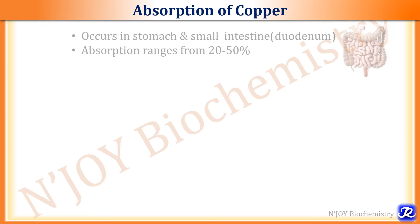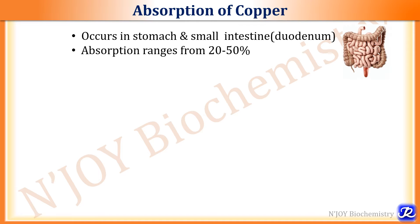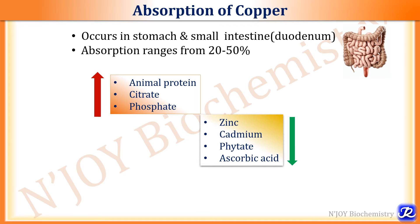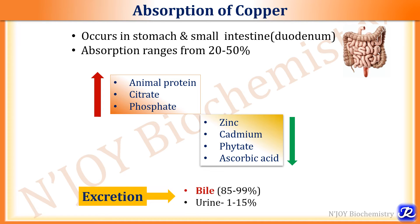Absorption of copper occurs in the stomach and small intestine, more predominantly in the duodenum. Absorption ranges from 20 to 50%. Animal protein, citrate, and phosphate increase the rate of absorption, while zinc, cadmium, phytate, and ascorbic acid decrease the rate of absorption. Excretion of copper occurs through bile and urine: 85 to 99% is excreted through bile and 1 to 15% through urine.